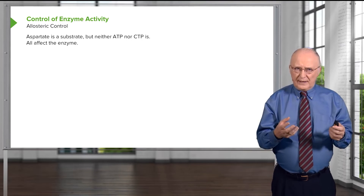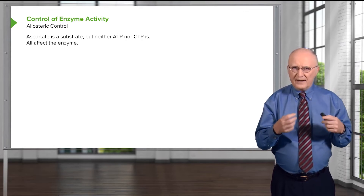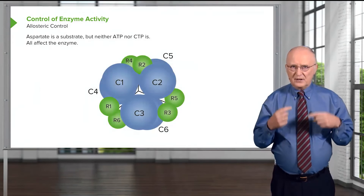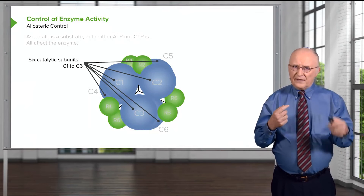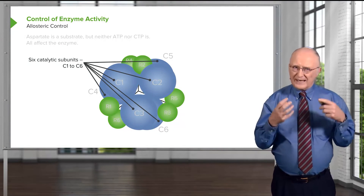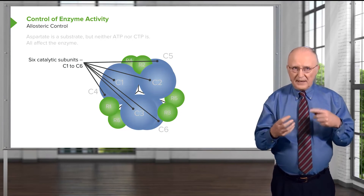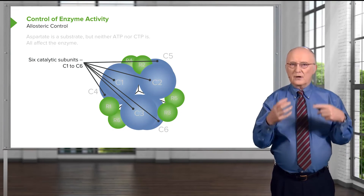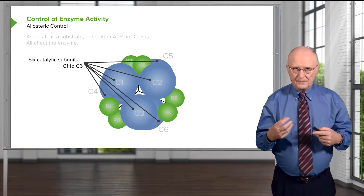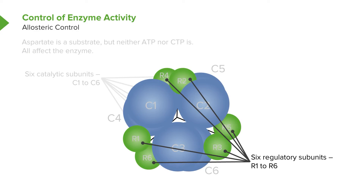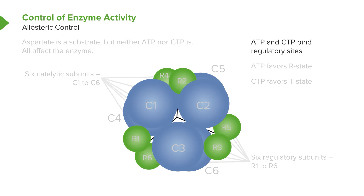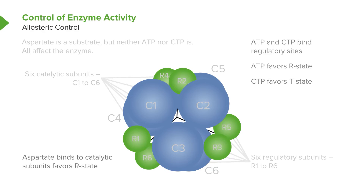Aspartate was a substrate, but neither ATP nor CTP was a substrate — however, all affected the enzyme. Aspartate and ATP turned the enzyme into the R state, and CTP turned it into the T state. Looking at the enzyme, the large blue balls are catalytic units — the places where the reaction is catalyzed and where aspartate binds. The green balls marked with R's are regulatory subunits, which bind either ATP or CTP. When this happens, the enzyme can flip its states: ATP favors the R state, CTP favors the T state, and aspartate also favors the R state.